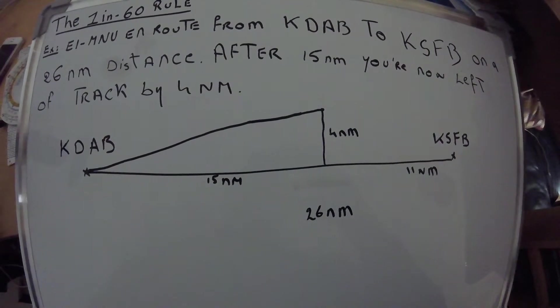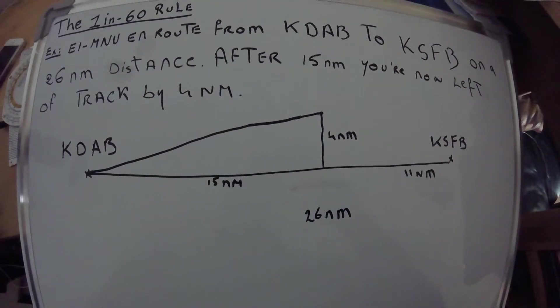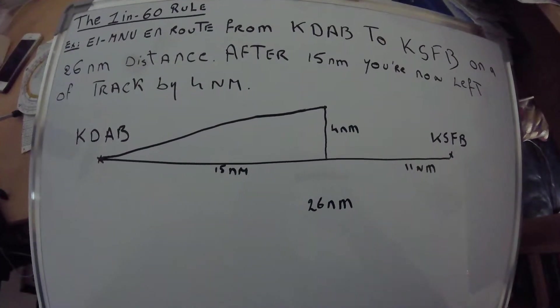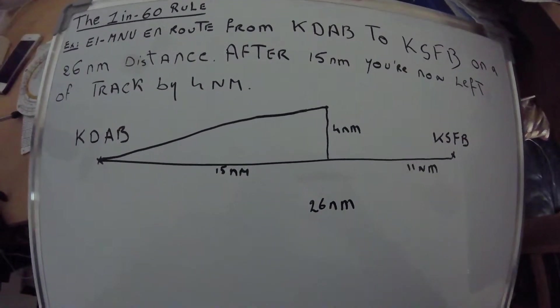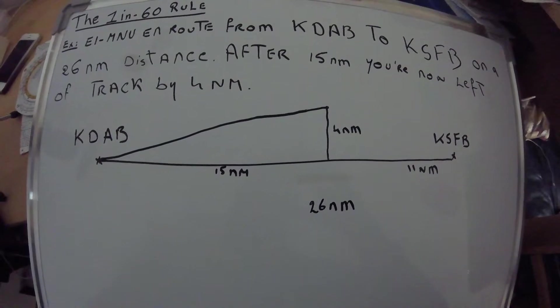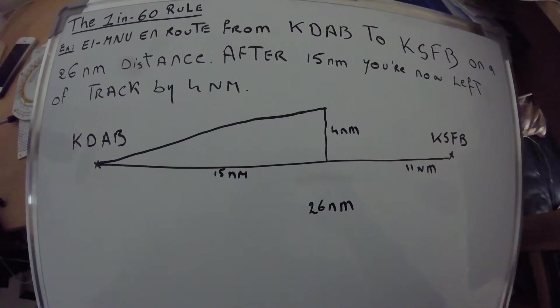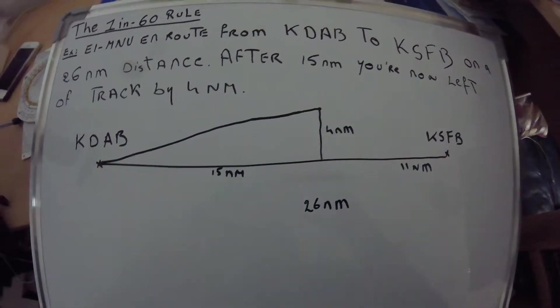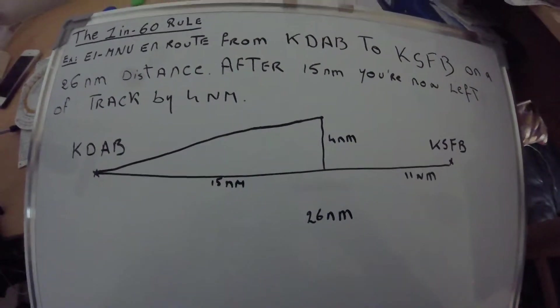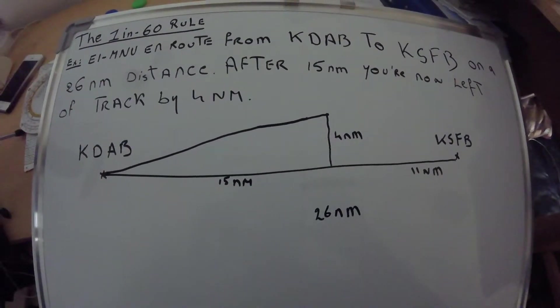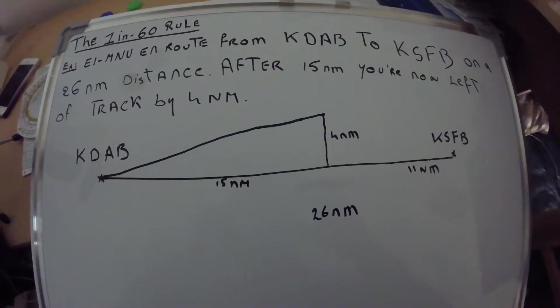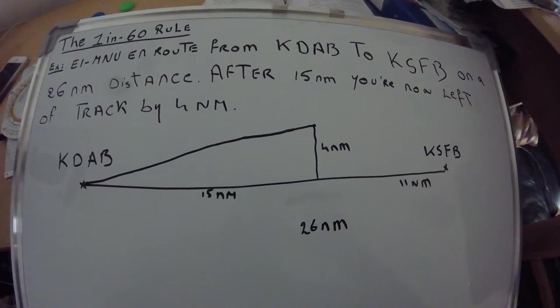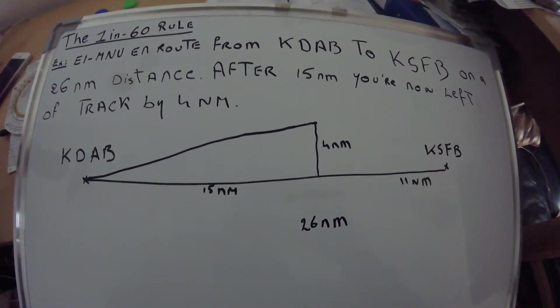I have Echo India Mike November Uniform traveling from Daytona Beach to Sanford International, a 26 nautical mile distance. So after 15 nautical miles, he is now left of track by 4 nautical miles.